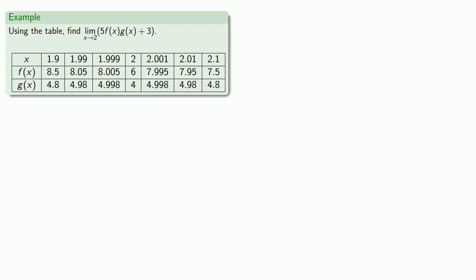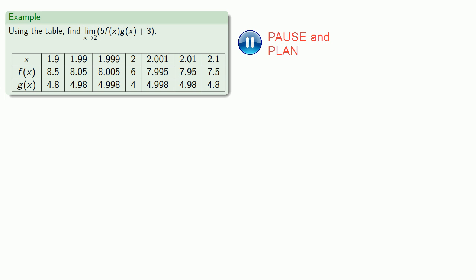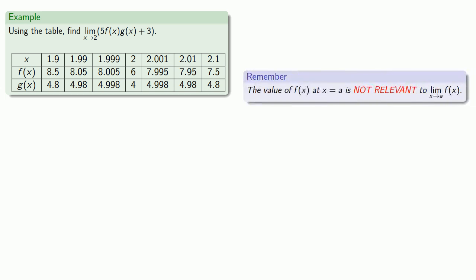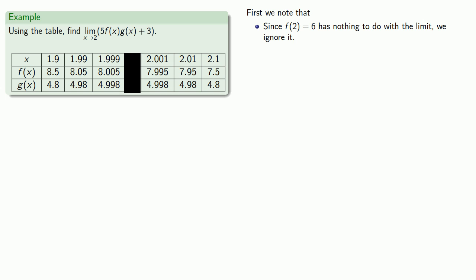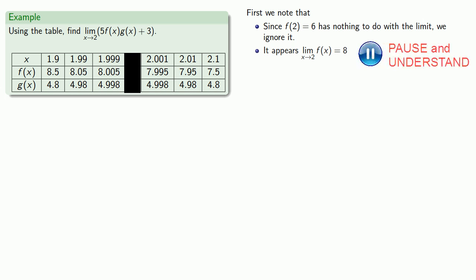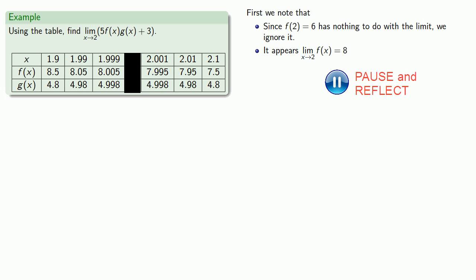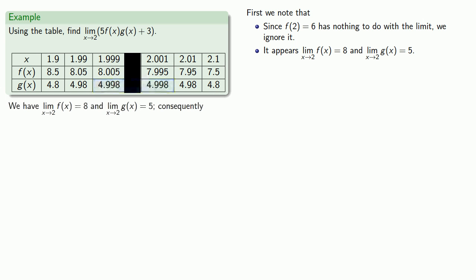For example, suppose we have a table of information and we want to use it to find the limit as x approaches 2 of 5 f(x) g(x) plus 3. An important thing to remember: the value of a function at x equals a is not relevant to the limit as x approaches a. So the values of f(x) and g(x) at x equals 2 are not relevant — we'll ignore them. Looking at the table, as x approaches 2, f(x) approaches 8, and as x approaches 2, g(x) approaches 5.